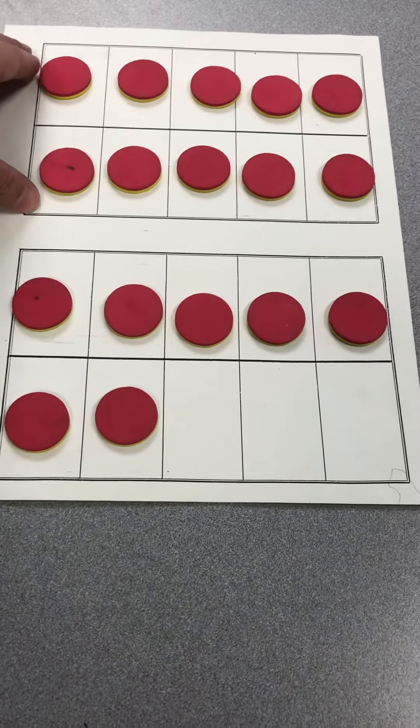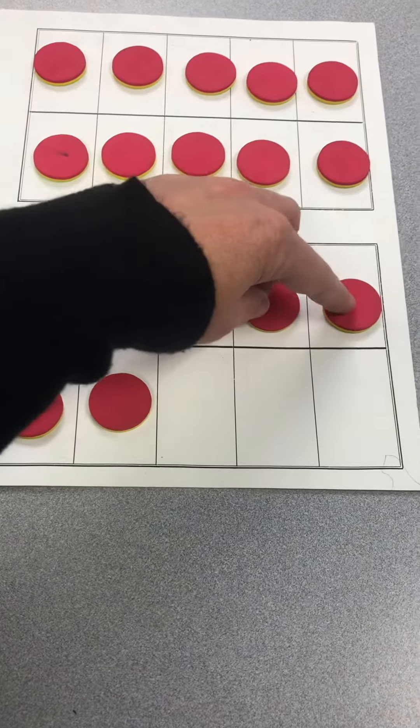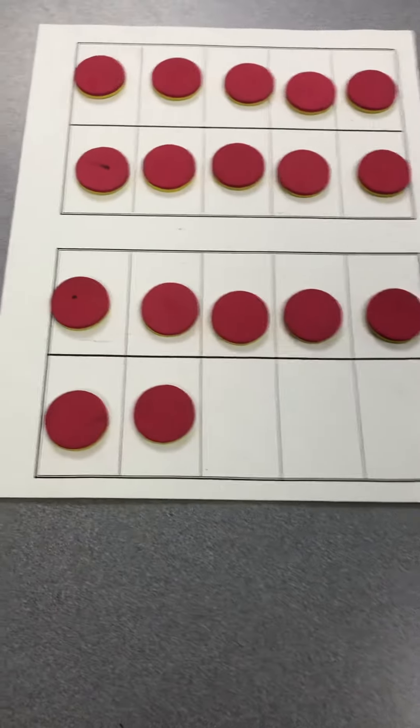Or you could say 10 in your head, 10, 11, 12, 13, 14, 15, 16, 17. That's called counting on.